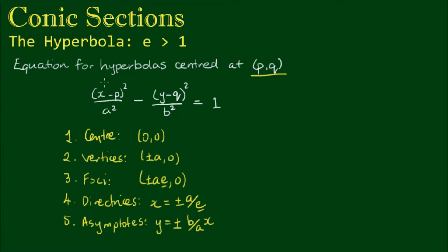Now for shorthand we can call this x - p capital X, and the y - q term capital Y. And the only modification we need to make to these features is to translate them or offset them by the coordinates of the center point (p,q). So the center point is obviously located at (p,q).